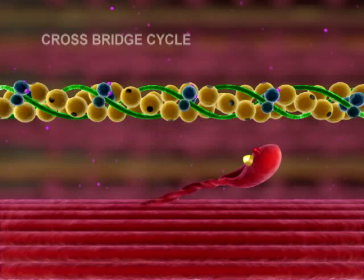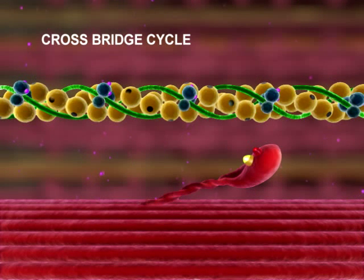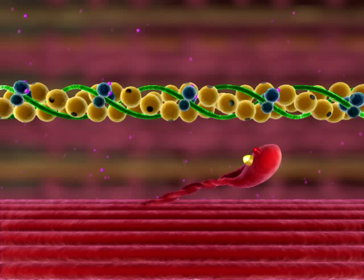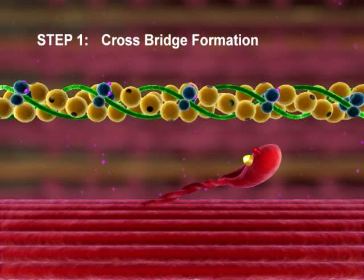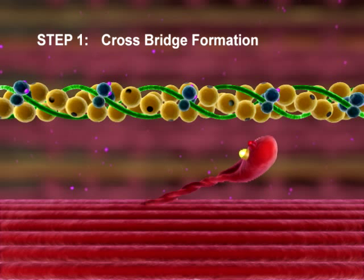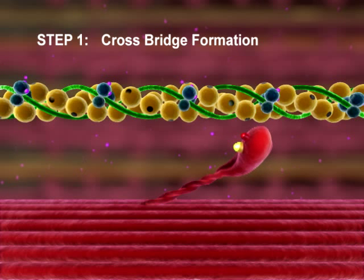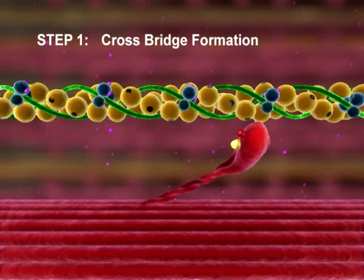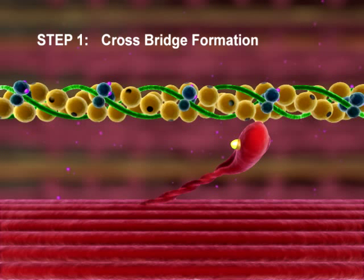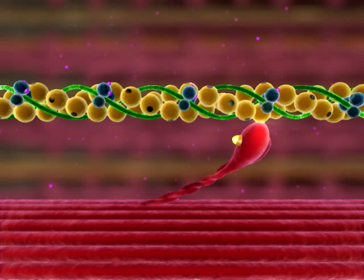A crossbridge cycle may be divided into four steps. Step 1: Crossbridge Formation. The activated myosin head binds to actin, forming a crossbridge. Inorganic phosphate is released, and the bond between myosin and actin becomes stronger.